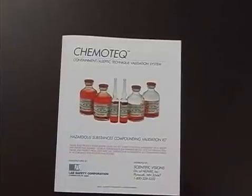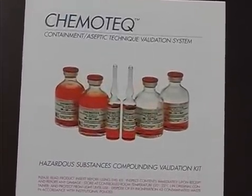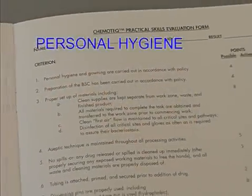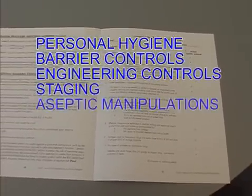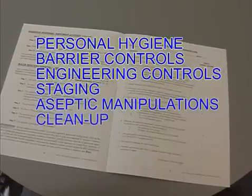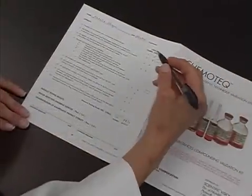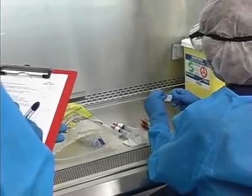While the candidate completes the exercise, the preceptor should observe and score the skills and practices on the Chemotech practical skills evaluation form. The candidate should employ all personal hygiene and barrier controls, engineering controls, staging, aseptic manipulations, cleanup, waste disposal, logging, and other procedures in accordance with policies and should be graded for compliance. A minimum passing grade of ninety percent is required for successful completion of the practical exercise.